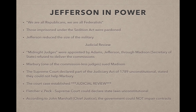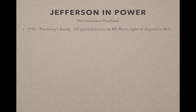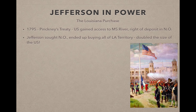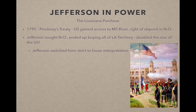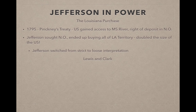In 1795, Pinckney's Treaty gave the U.S. access to the Mississippi River and the right of deposit — the ability to store goods in New Orleans. Jefferson wanted New Orleans but ended up buying the entire Louisiana Territory, doubling the size of the U.S. Jefferson switched from strict to loose interpretation of the Constitution to justify this purchase — which the Federalists pointed out was hypocritical, since he had criticized their loose interpretation.